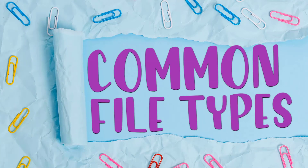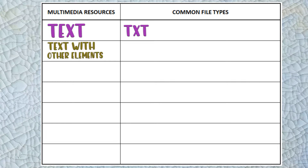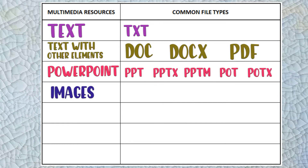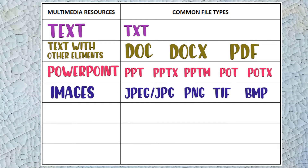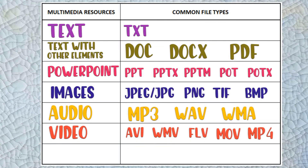Common file types: Below is a table of the common file types of multimedia resources. For text, we have TXT. For text with other elements, we have DOC, DOCX, and PDF. For PowerPoint slides, we have PPT, PPTX, PPTM, POT, and POTX. For images, we have JPEG, PNG, TIF, and BMP (Bitmap). For audio, we have MP3, WAV, and WMA. For video, we have AVI, WMV, FLV, MOV, and MP4. And for animation, we have GIF and FLV.